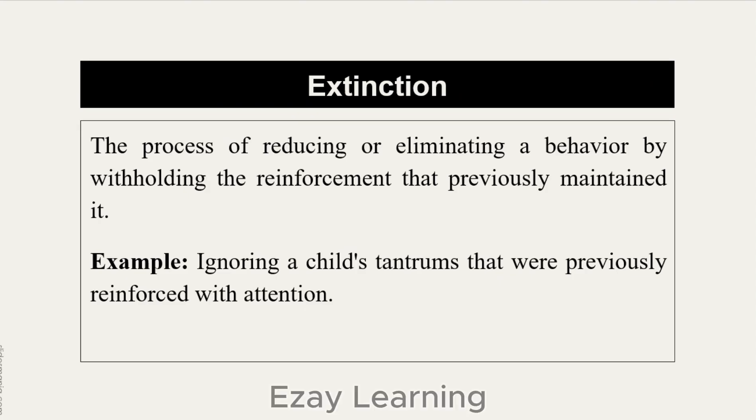Even though there are lots of terms, you can guess by the name and it will be easy to remember. By the term extinction, we talk about things that do not exist anymore. In ABA, extinction is the process of reducing or eliminating a behavior by withholding the reinforcement that previously maintained it. We are not talking about the behavior that has been reduced alone — it was being maintained by reinforcement before, and then you stop the reinforcement. Because of withholding the reinforcement, the behavior is reduced or eliminated — that is what we call extinction in ABA.